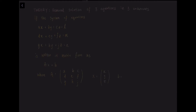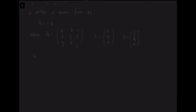For this equation to be valid, we need matrix A to be non-singular. Non-singular means that its inverse exists, or we can write A⁻¹ exists. This is because to find the solution, we need the inverse matrix, so that we can write x equals A⁻¹ times B, and we can find x.